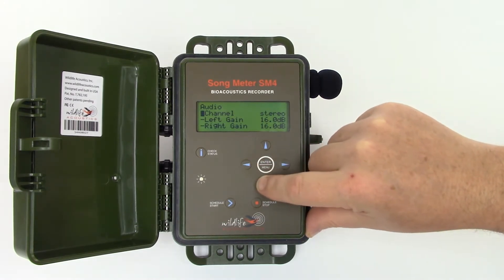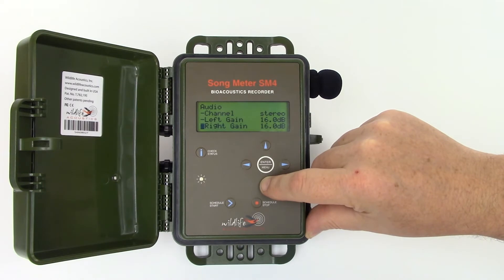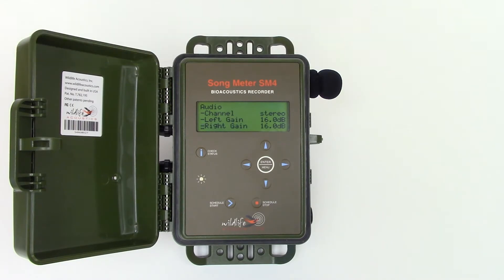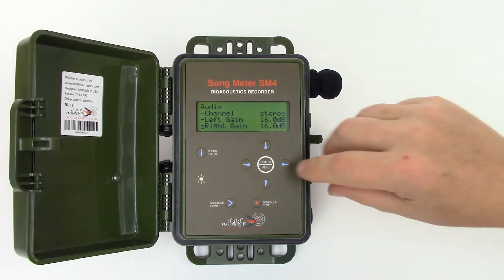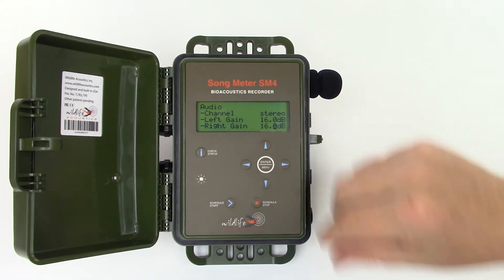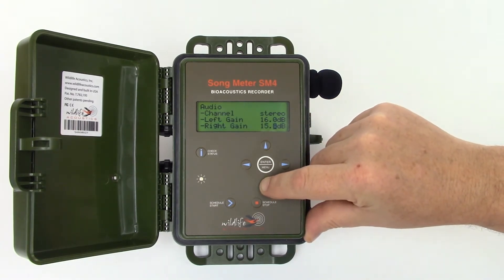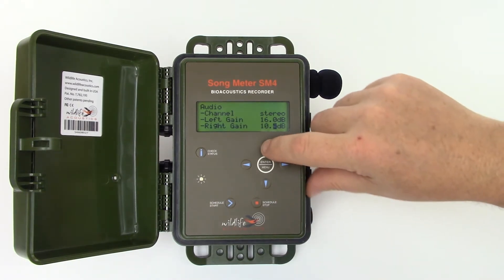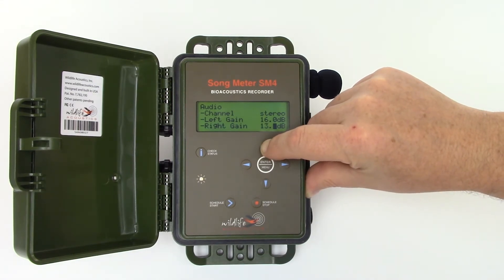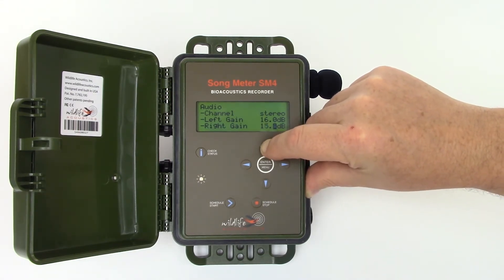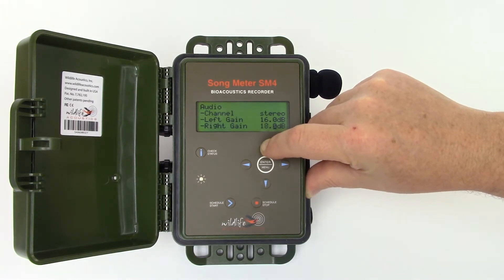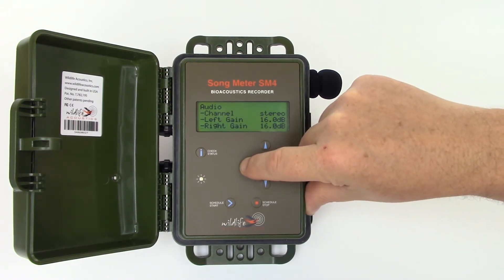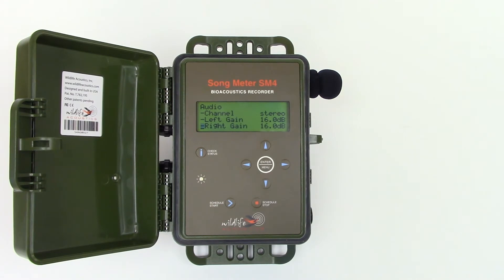Left gain and right gain provide boost or attenuation for each microphone. The default setting of 16 dB assumes the built-in microphones are being used, and this is a good starting point for most bioacoustics recordings. If the recorder is deployed near sound sources that are extremely loud, you might find that you need to turn the gain down so the mic inputs are not overloaded and the recording files don't have clipping distortion. If the sound source is unusually quiet, you can increase the gain. These are the only typical circumstances where you should have to adjust the gain with the built-in microphones. For most environments, if the sound source is quiet, it will still be picked up with the default gain setting.